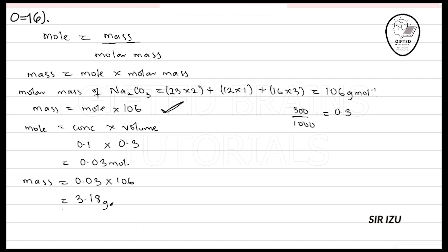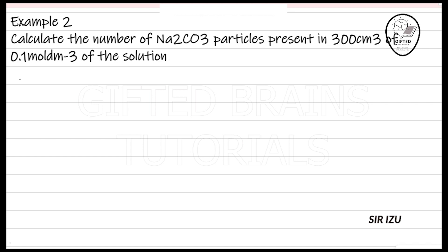Example 2: Calculate the number of Na2CO3 particles present in 300 cm³ of 0.1 mole per dm³ of the solution. Quite an easy question, one we are familiar with. If I'm to get number of particles, I come to write the formula relating mole and number of particles. Mole equals number of particles over 6.02 times 10 to the power 23.